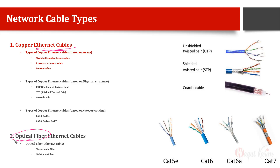Copper ethernet cables have further three types. We can classify them based on three criteria: the first classification is based on their usage, the second classification can be based on their physical structure, and the third classification can be based on their category or rating. So let's see them one by one.